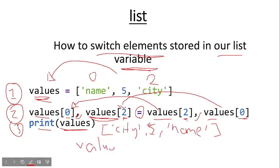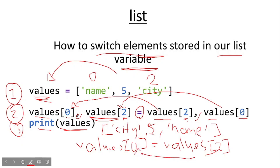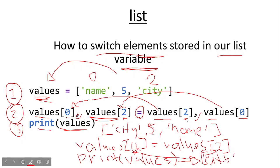Now if you were to write 'values[0] = values[2]', index 2 would go to index 0 and 'city' would replace the string 'name'. However, the original 'name' value itself would be lost. So it's safe to perform switching as in the first example, where both elements are saved. If done singularly as in the second example, the value will be lost.